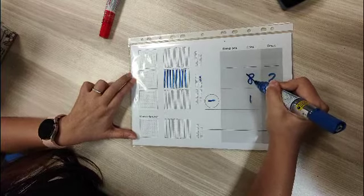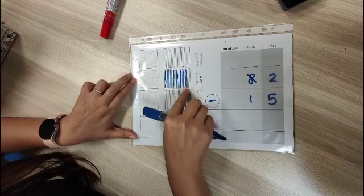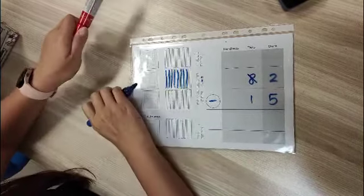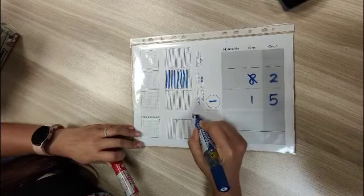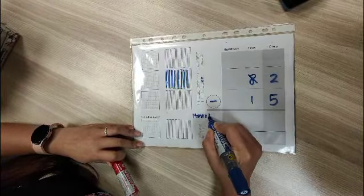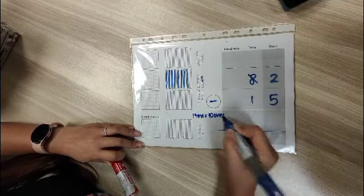I'm going to take out one 10. I rename this 10 into 10 ones because one 10 equals 10 ones.